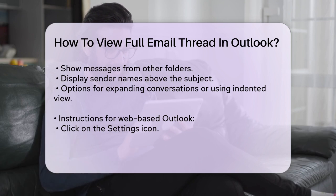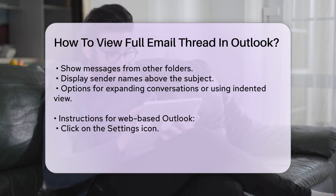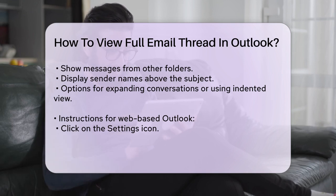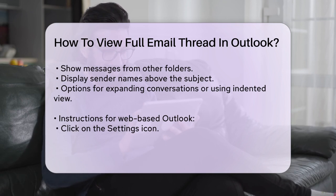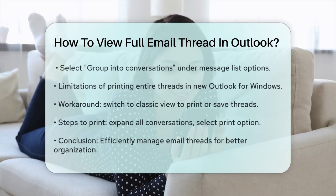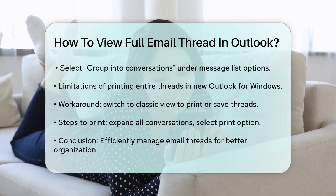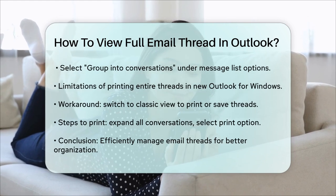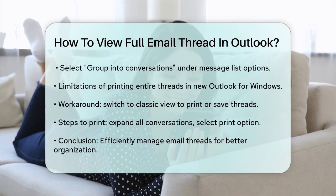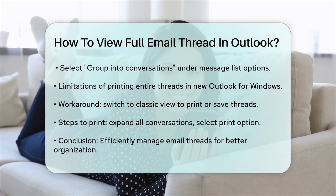Now, if you need to print or save the entire email thread, there's a bit more to consider. Currently, the new Outlook for Windows has a limitation where printing an entire thread might not include all the messages. To get around this, you can revert to the classic Outlook view temporarily. In the classic view, you can expand all conversations and then print the entire thread as needed.